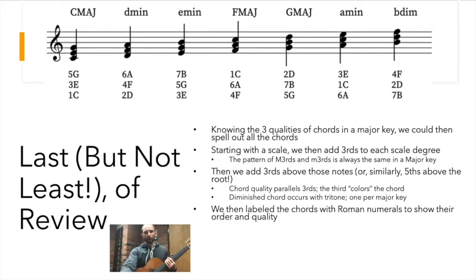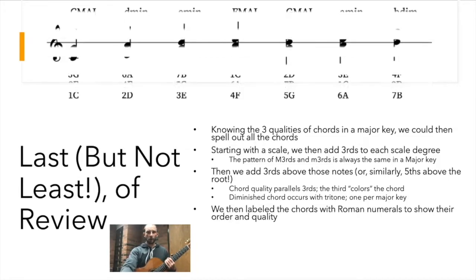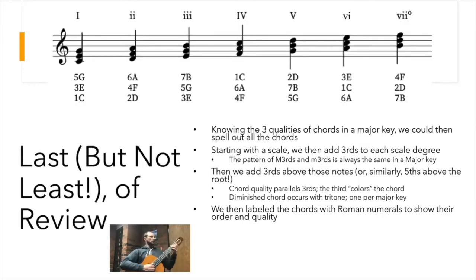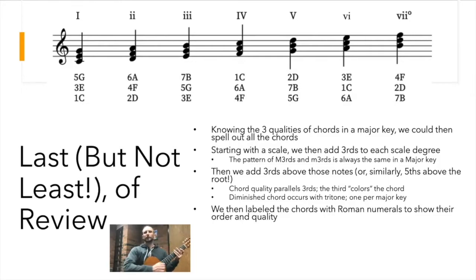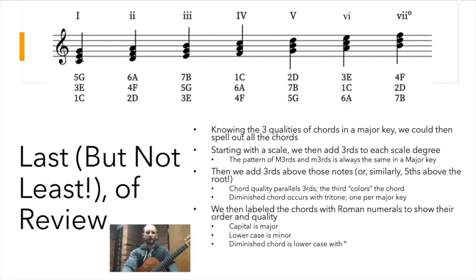After this, we labeled the chords with Roman numerals to show their order and quality. We have — playing an octave below — major chords as I, II minor, III minor, IV major, V major, VI minor, then VII diminished, back to I major. Capital Roman numerals meant major, lowercase meant minor, and then the diminished symbol — which you can find in emojis under letter-like symbols — marks that seventh chord. We mapped this all out in C.